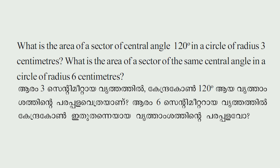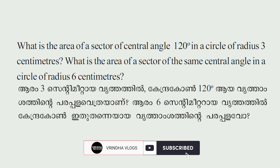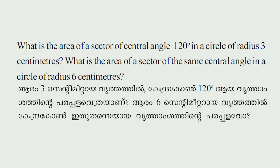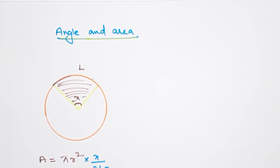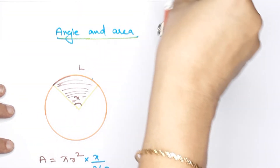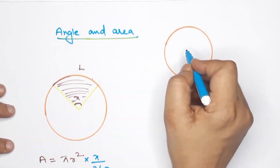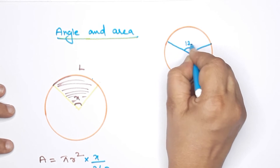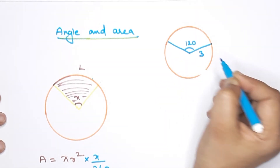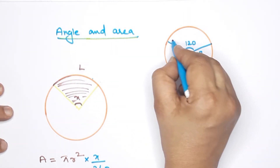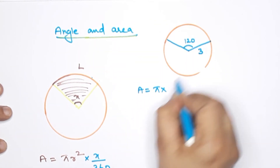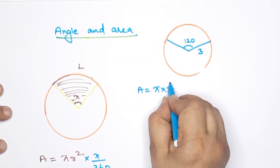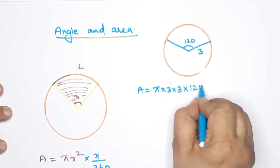What is the area of a sector with central angle 120 degrees in a circle of radius 3 centimeters? I have a circle with central angle 120 degrees and radius 3 cm. Using the area formula: Area = πr² × (x/360) = π × 3 × 3 × (120/360).